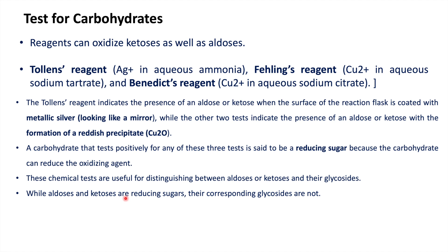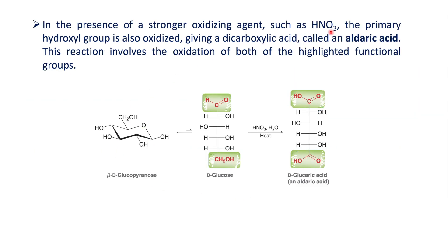These tests cannot be used for glycosides, because at the anomeric position the group is protected, so there is no free aldehyde or ketone. When you treat a sugar with nitric acid, the alcohol is also converted to acid, giving two acid products: the aldehyde is converted to acid and the CH2OH group is also converted to acid, yielding the product called aldaric acid, also known as D-glucaric acid. This covered all the chemical reactions of carbohydrates and the test reagents used to detect aldose and ketose. Thank you for watching.